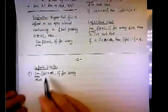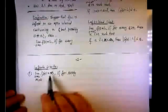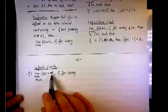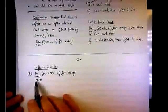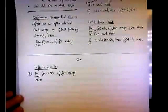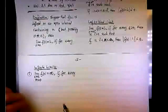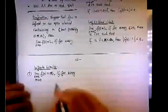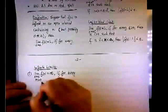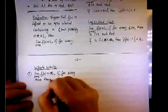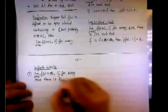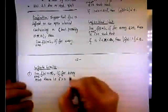We say that the limit of f of x when x approaches a is infinity if for every positive m there is a delta, so there is positive delta such that...